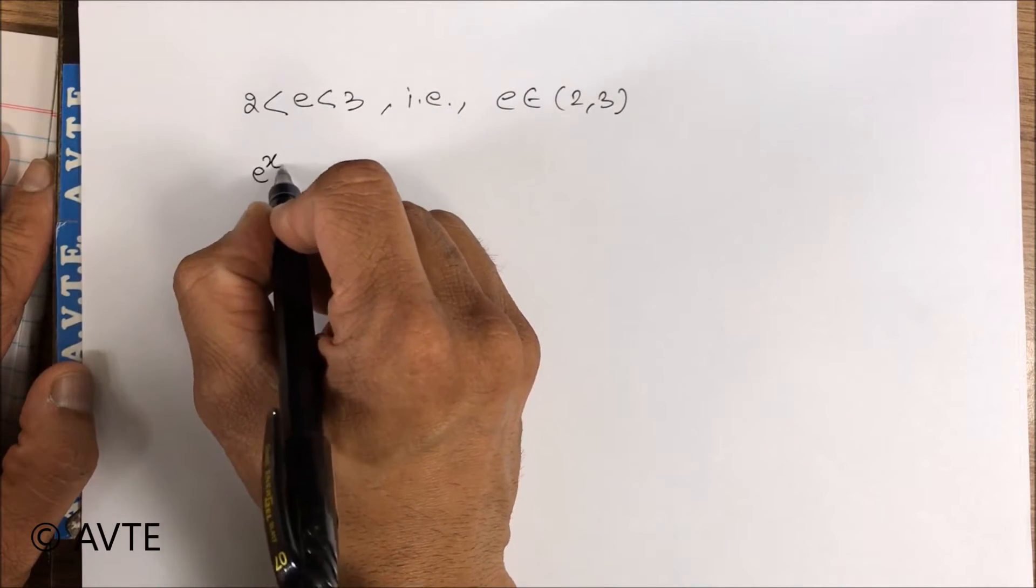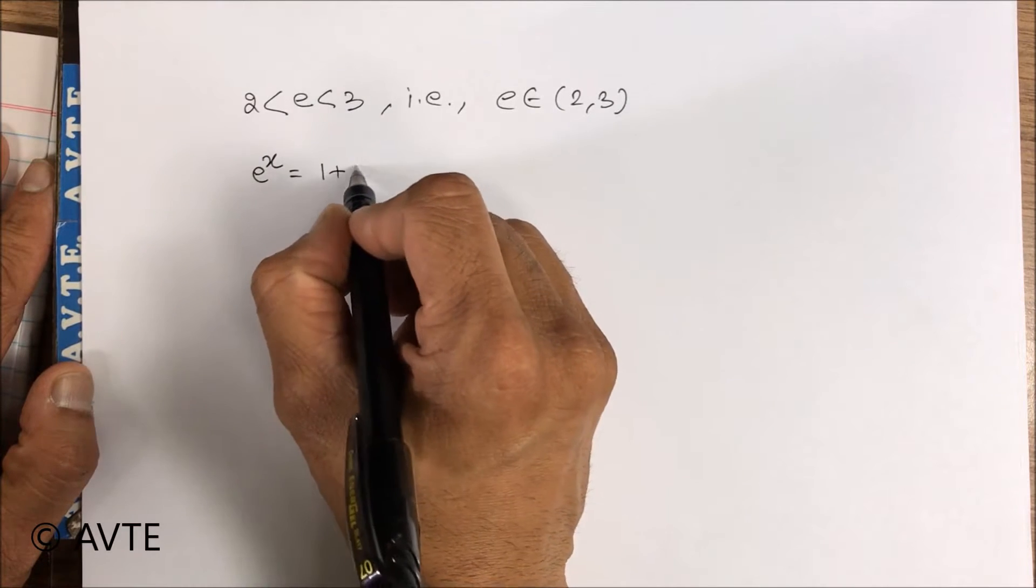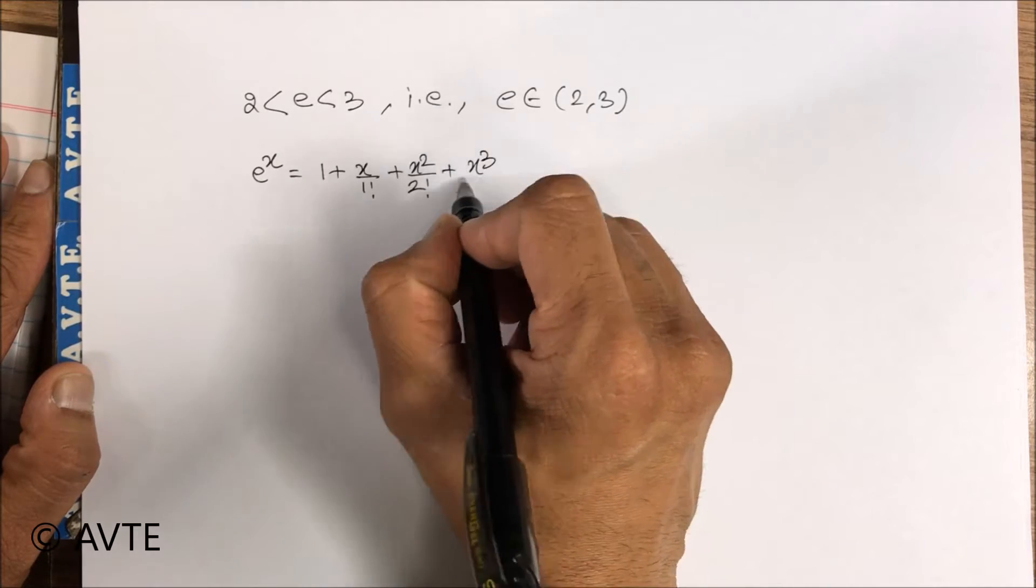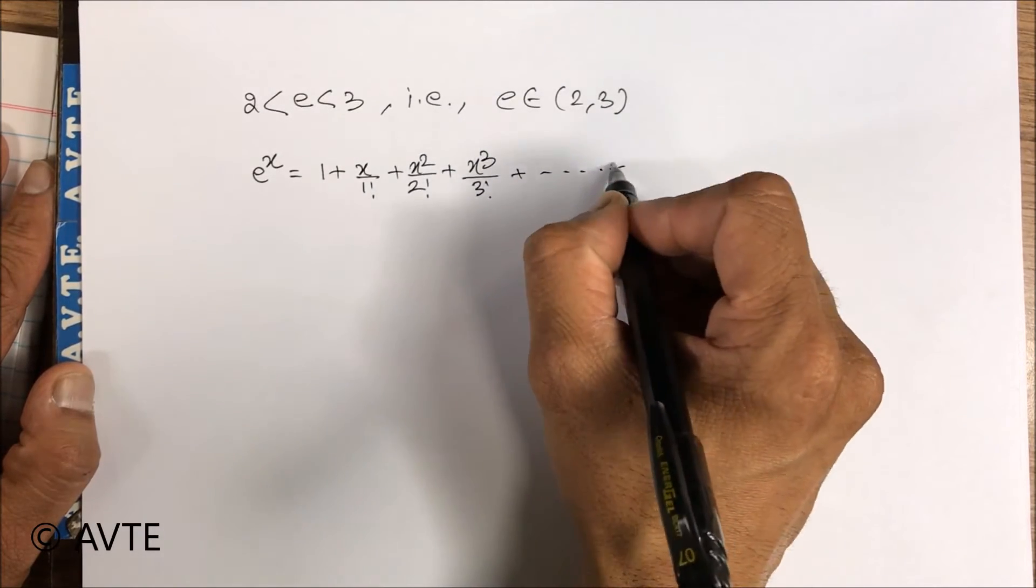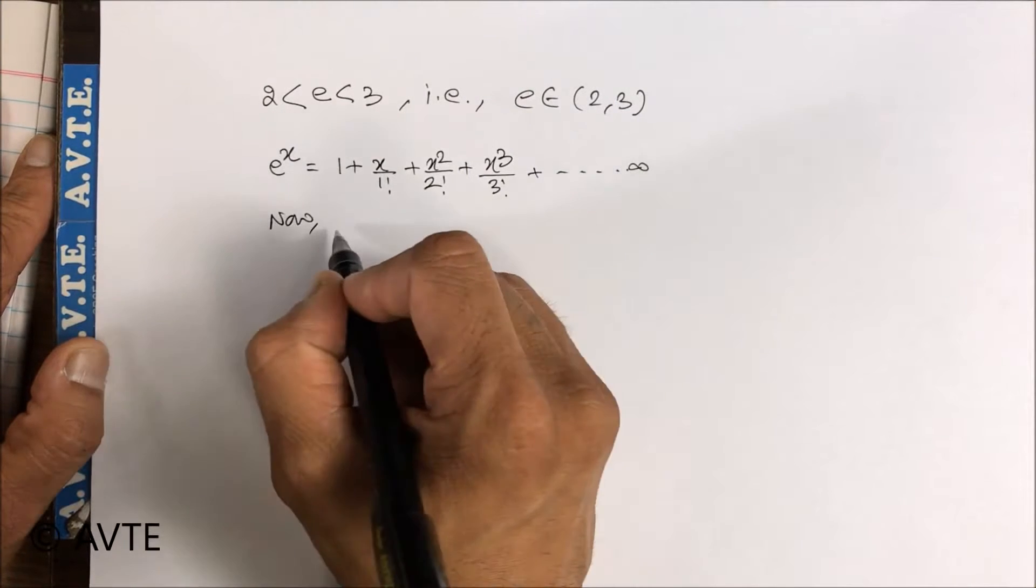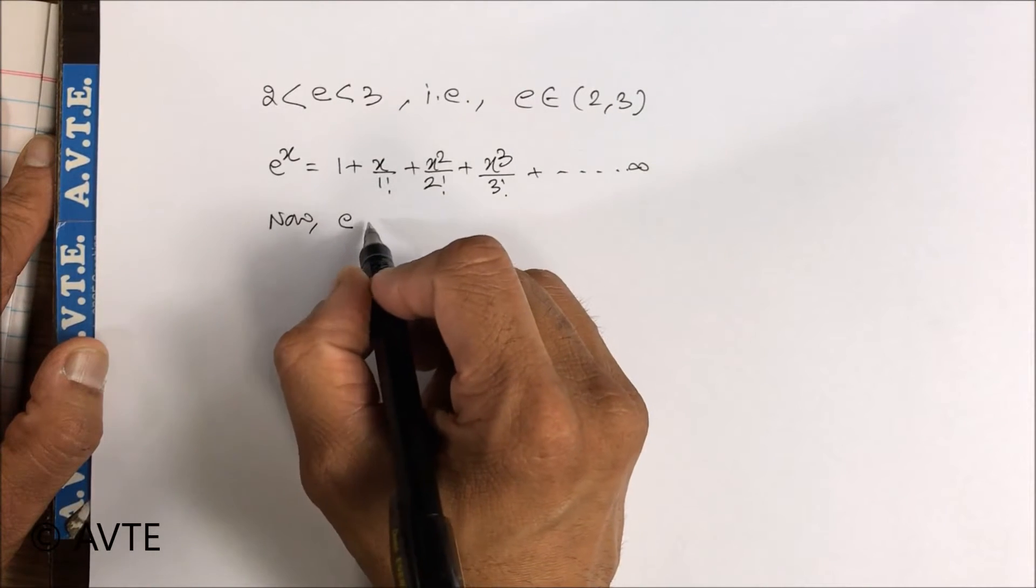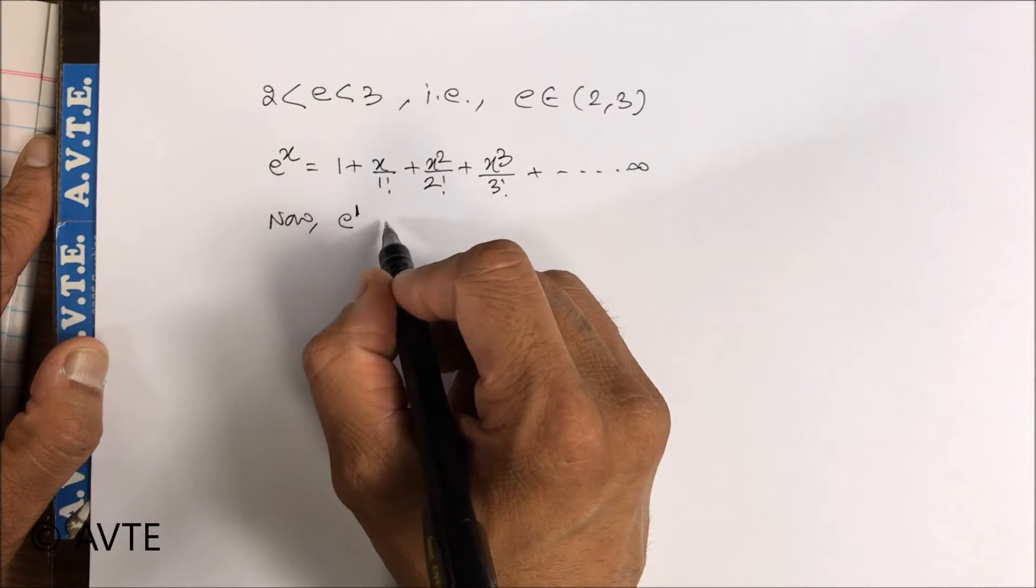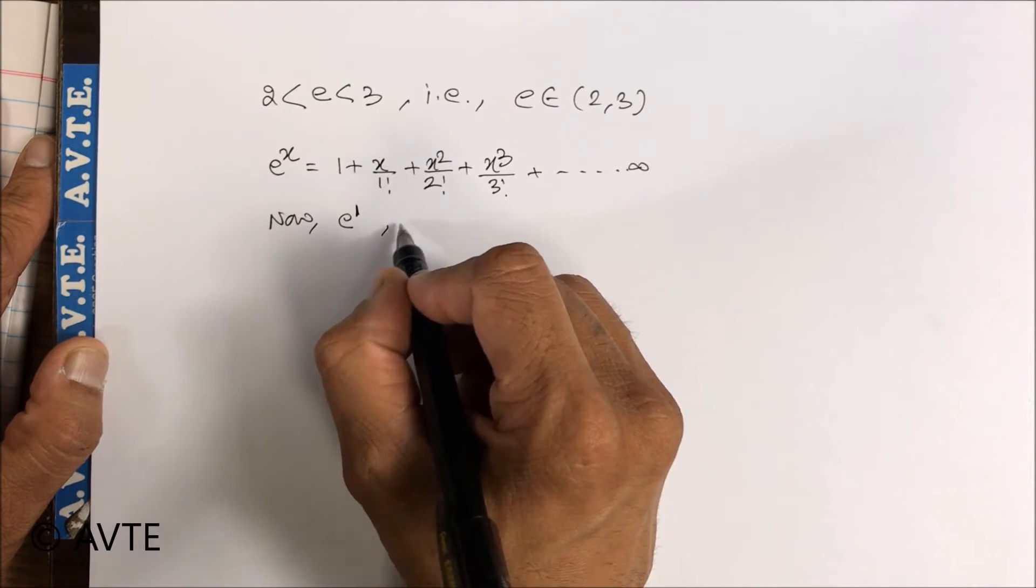The expansion of e to the power x is 1 plus x over 1 factorial plus x squared over 2 factorial and it goes on till infinity. Now for e, one can understand that this is e to the power 1, that is here x is equal to 1.